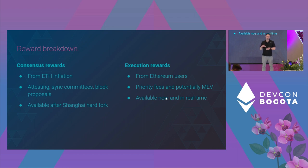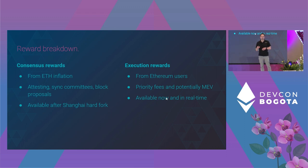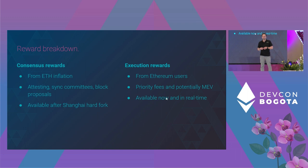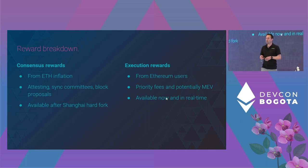Withdrawals aren't available at the moment but they will be potentially after the Shanghai hard fork. The next type of reward is the execution rewards — they come from users, specifically from priority fees which are the non-burnt part of a transaction fee, and then potentially MEV if you're extracting MEV. That's actually available today and pretty much in real time. How a staking protocol captures and then distributes those fees or rewards is key to its design.